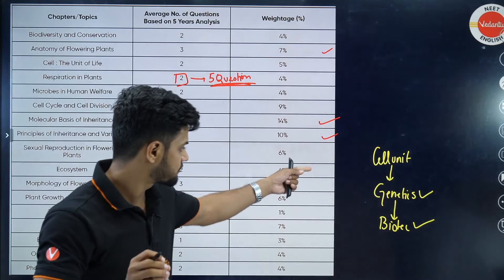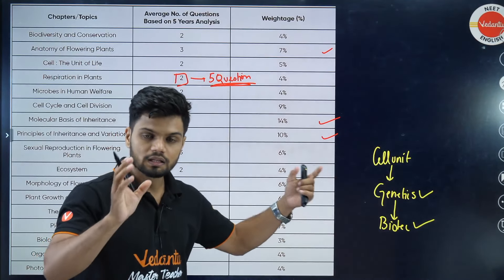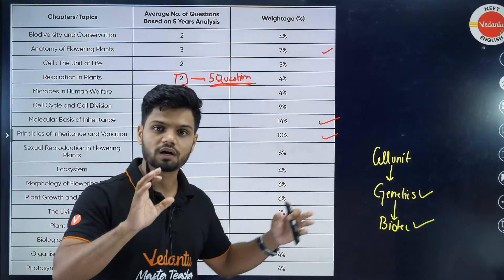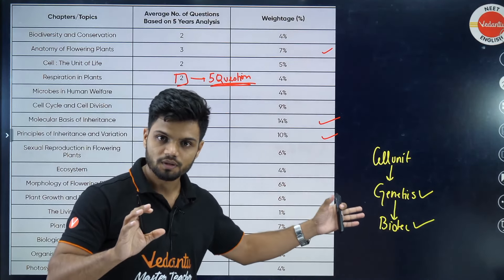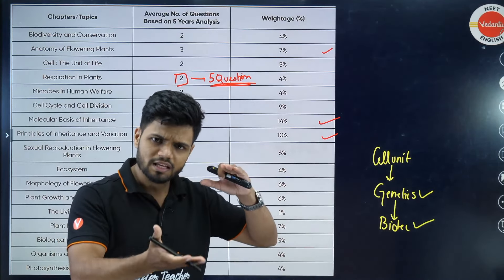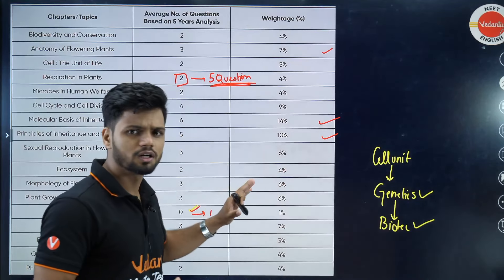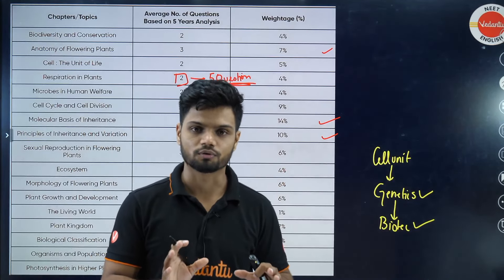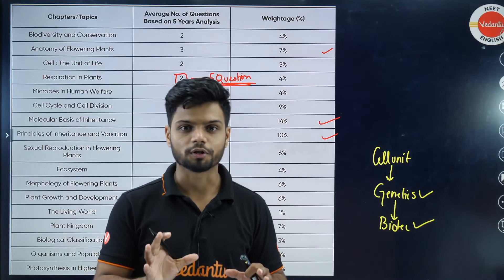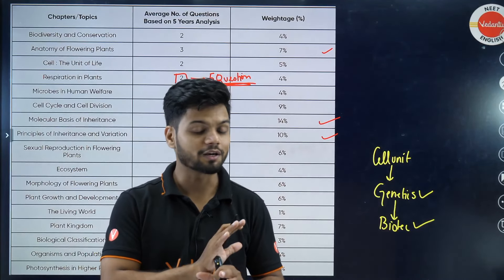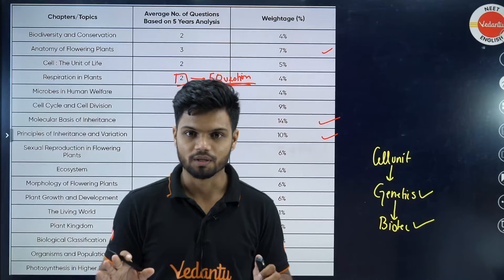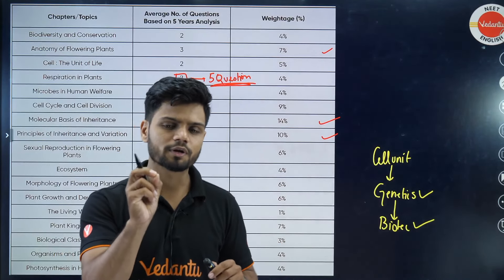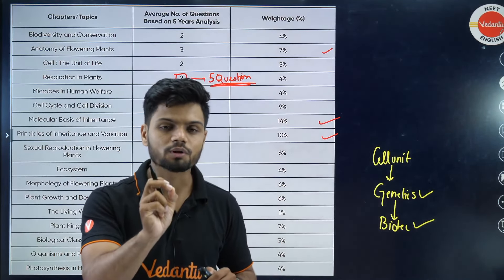I would advise you to learn Plant Physiology first, then Anatomy and Morphology after that. Least priority should be given to Living World, Biological Classification, Plant Kingdom, and those chapters — although Plant Kingdom is very important.